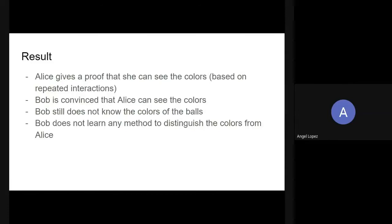At the end, Alice gives a proof that she can see the colors, but Bob still does not know the colors of the balls. No knowledge was transferred from Alice to Bob. In some way Bob can assert something, but he does not learn any method to distinguish colors - he cannot distinguish colors yet. There is a proof, but no transfer of knowledge. Many times the proof is about a secret, but without sharing the secret. Imagine you can prove you have a password without revealing the password.